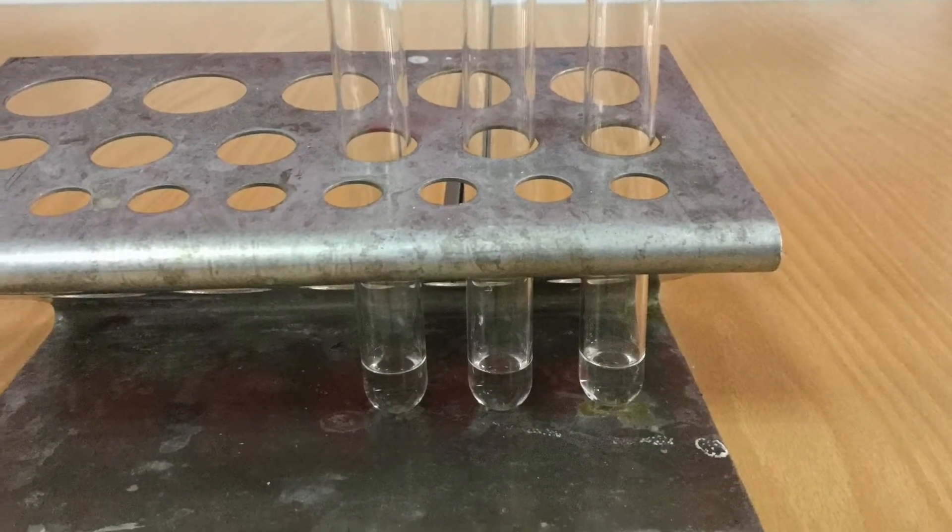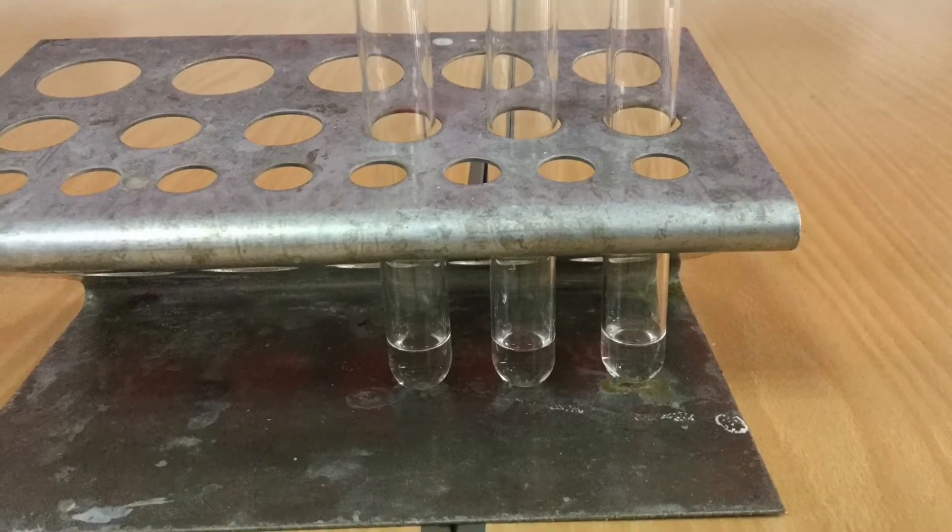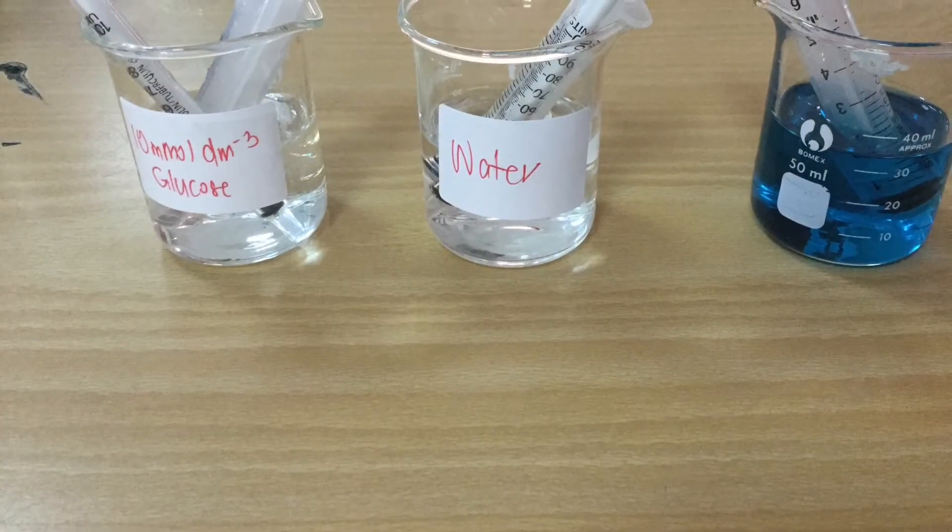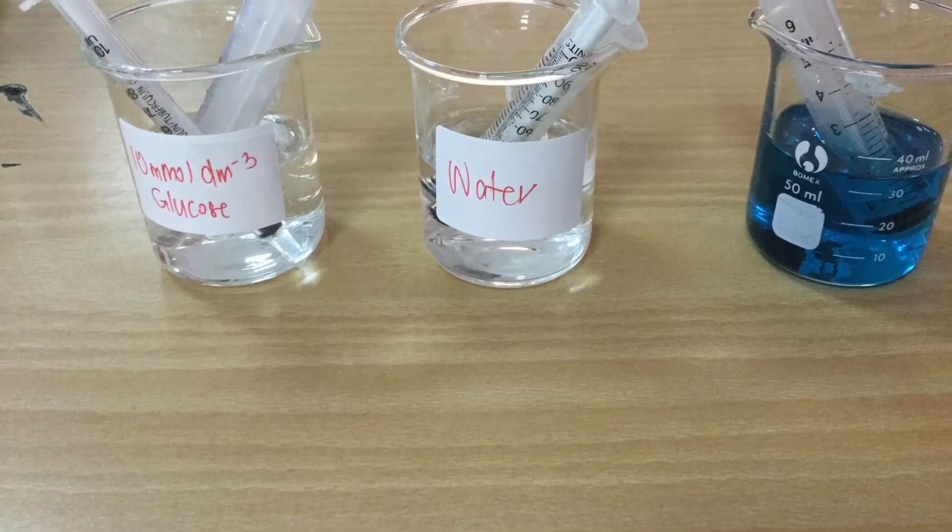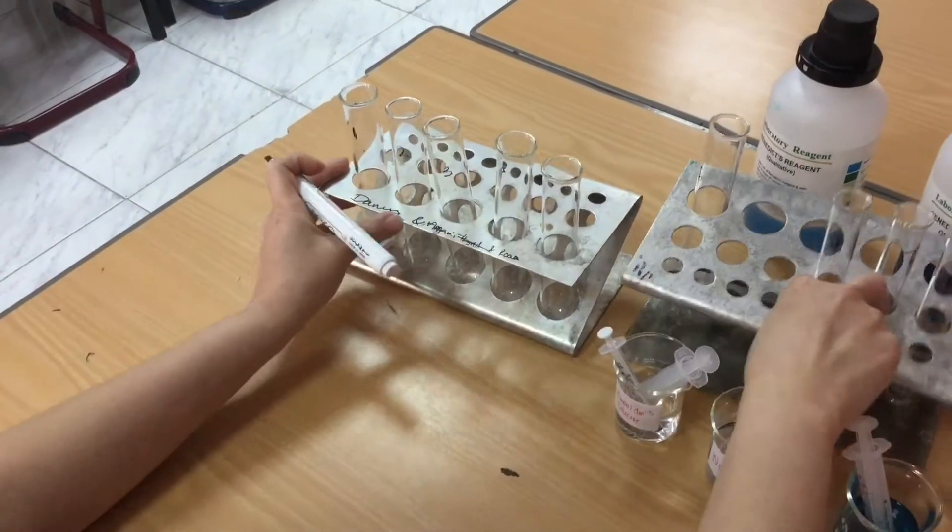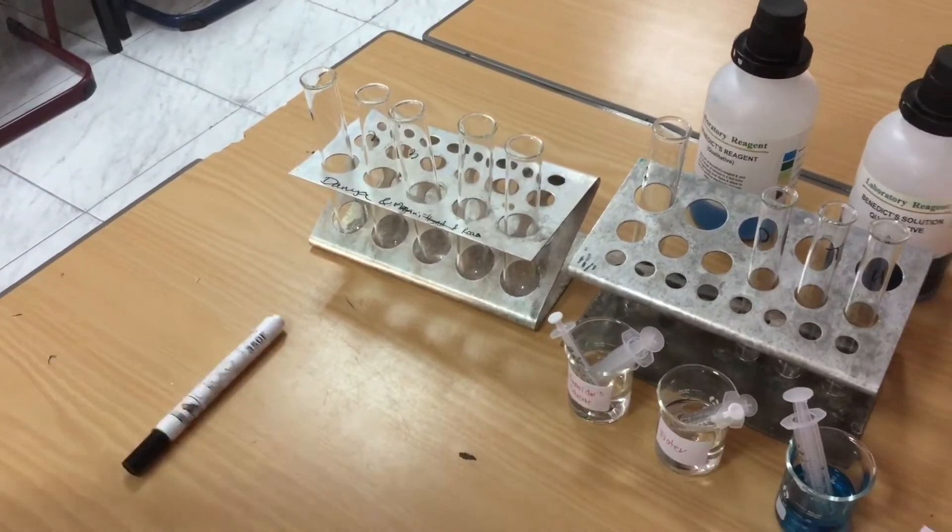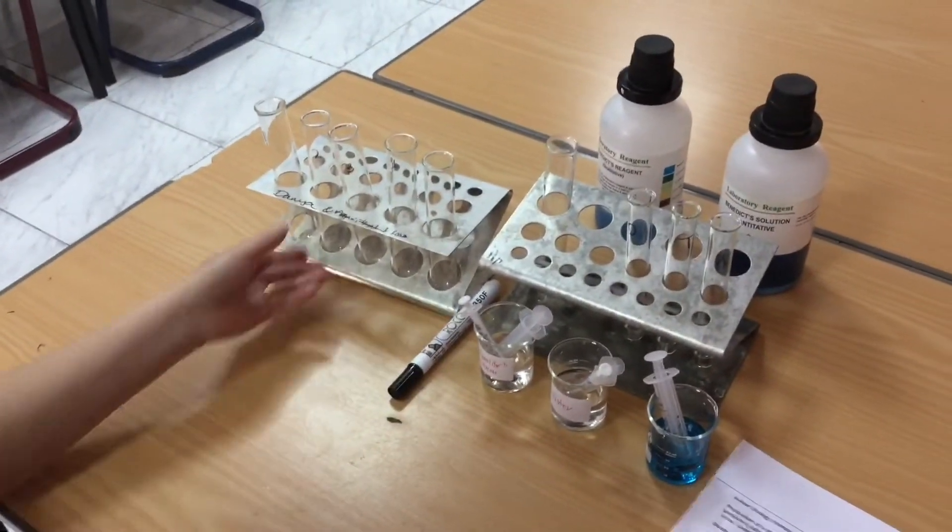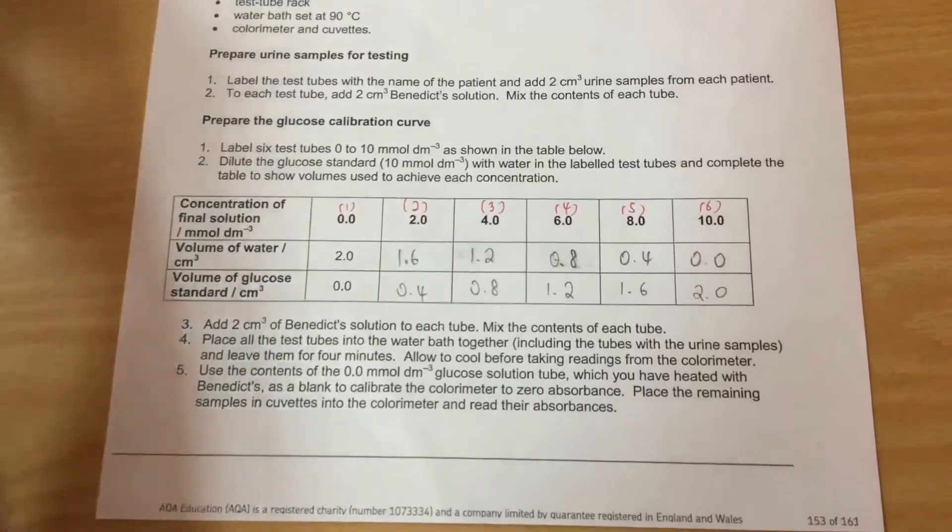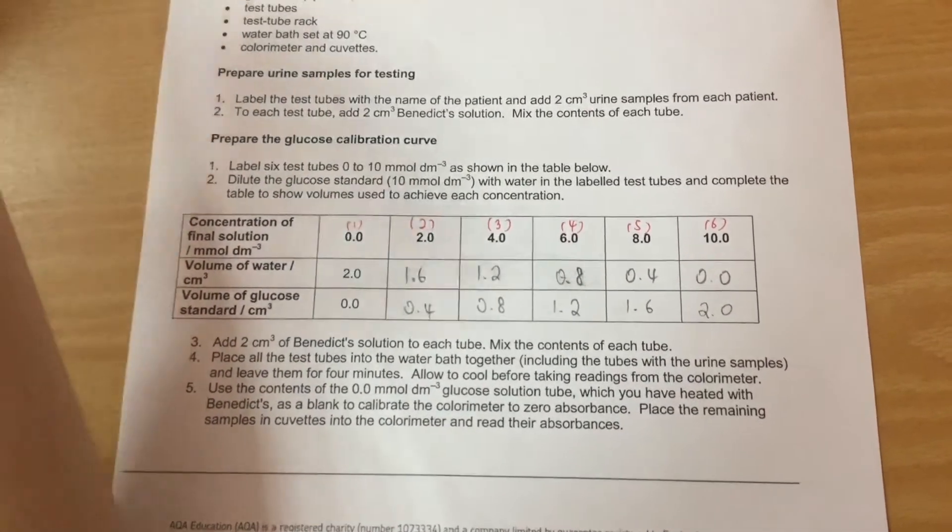Here are the three samples containing two mils of urine. To make my calibration curve I'm going to use 10 millimoles per decimetre cubed of glucose solution and I'm going to dilute it into six different dilutions ranging from zero to 10 millimoles.